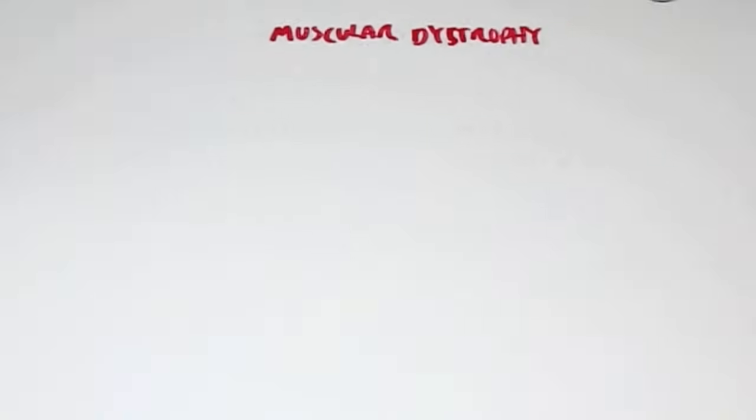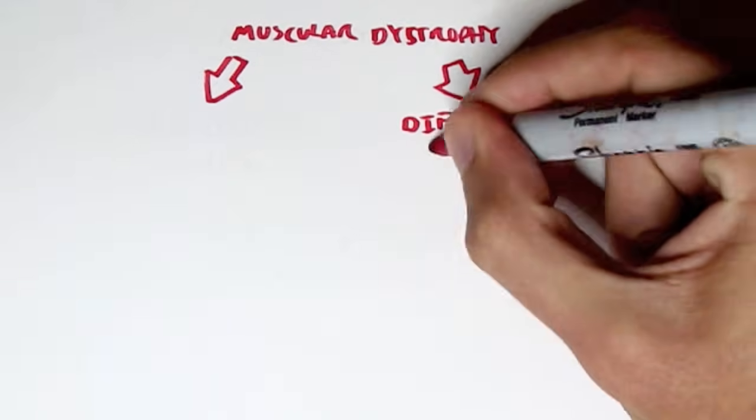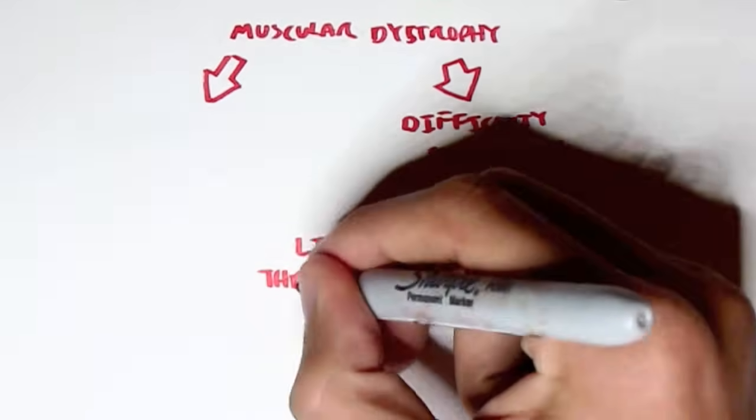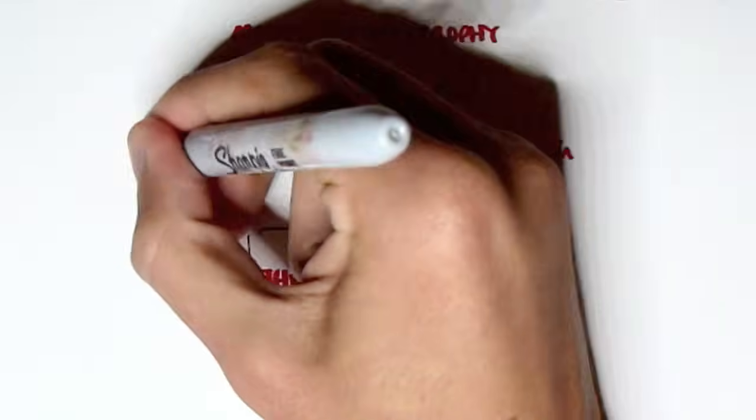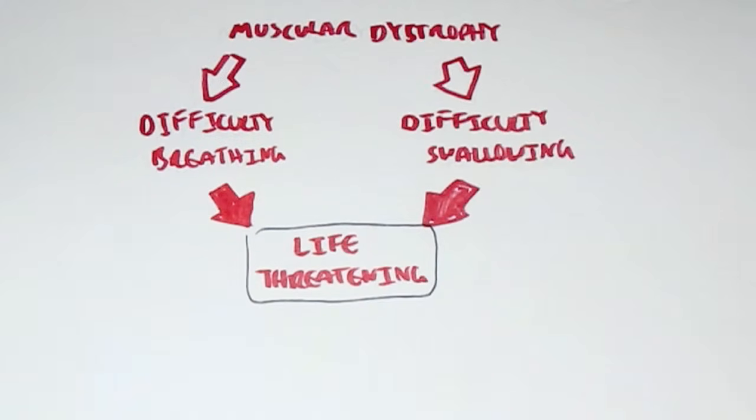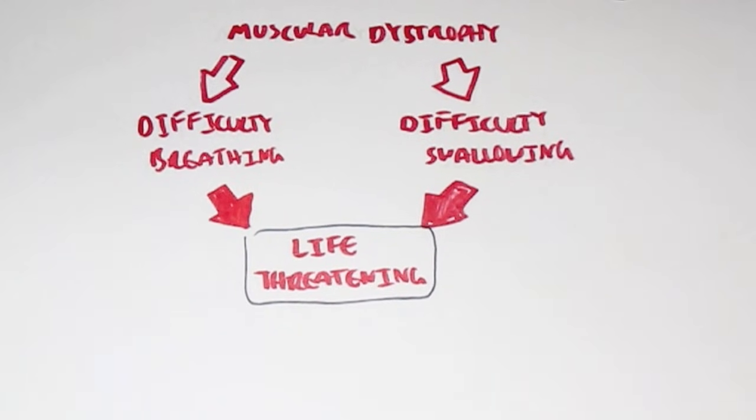Myotonic and Duchenne muscular dystrophy, and as well as any other type of muscular dystrophy, can get very serious, extremely serious and life threatening when there's difficulty in swallowing and difficulty in breathing. As of yet, there is no cure for muscular dystrophy, and it's such a serious condition. But there are a lot of foundations out there that try to find a cure. And so, supporting these foundations would mean a lot. Anyways, thank you for watching. Please comment, like, and subscribe.